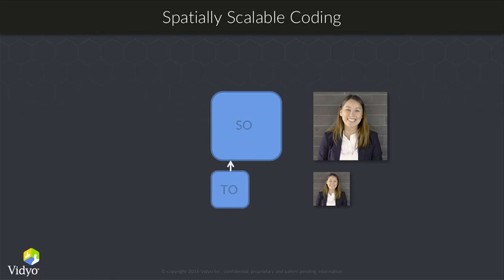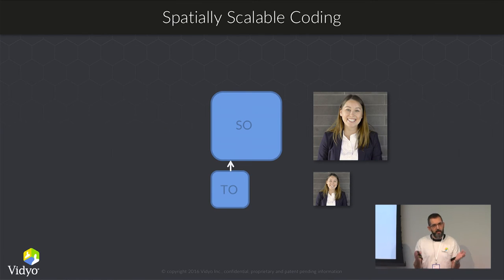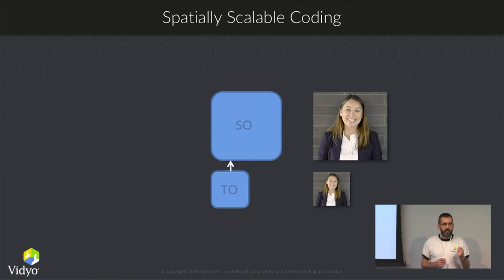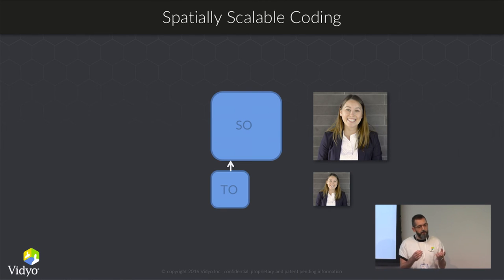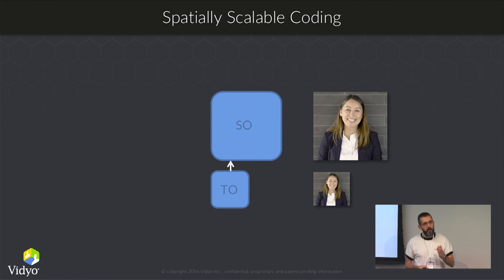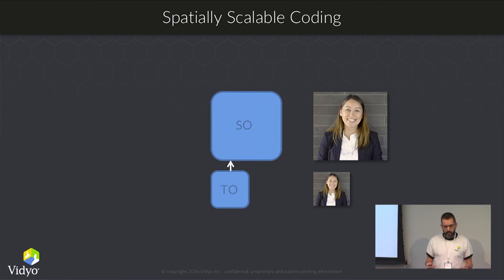Building on top of that, a scalable stream can also have a spatial component. Just as we broke the temporal dependency, we can also create an interdependency in space. We can create two layers — an SD and an HD layer — where the HD layer derives from the T0 layer. We use the fact that those frames are very similar to create a differential in space as well. Just as a video stream involves differentials from one frame to the other, the same is true when scaling from small to large resolution, and we use that differential to save bandwidth when transmitting over SVC.